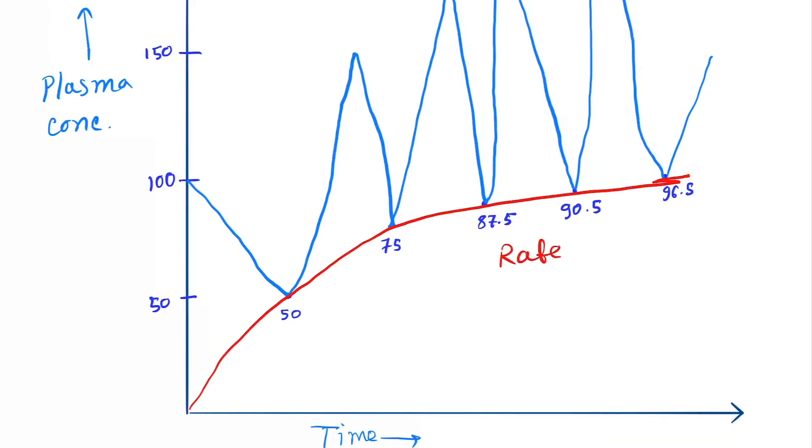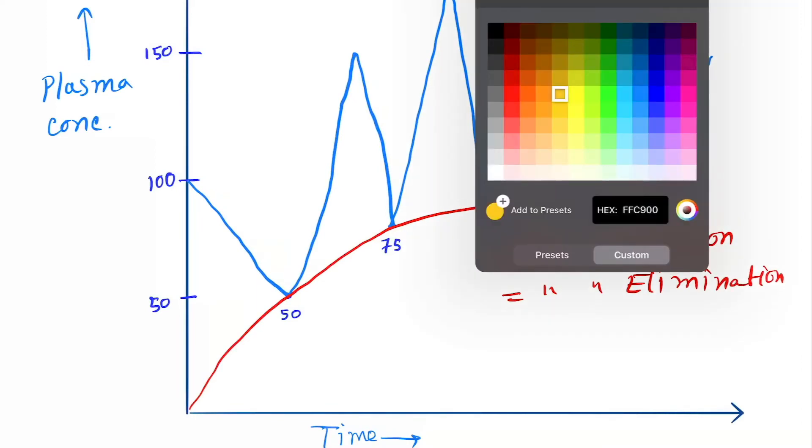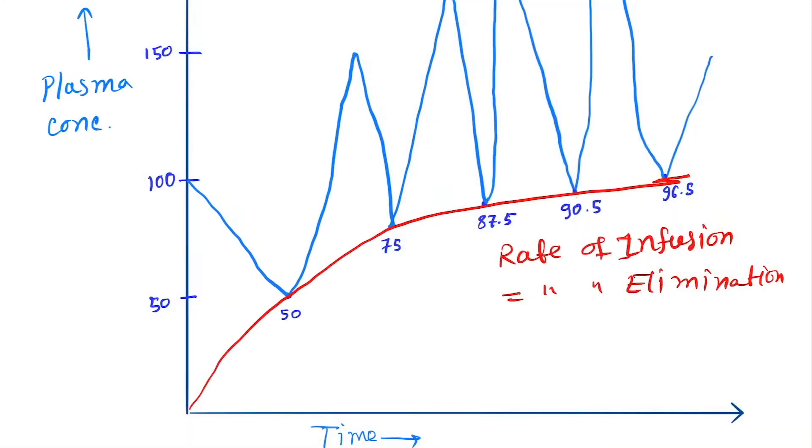The rate of infusion is equal to the rate of elimination at steady state. Now see at what point this occurs - it's around 90.5.